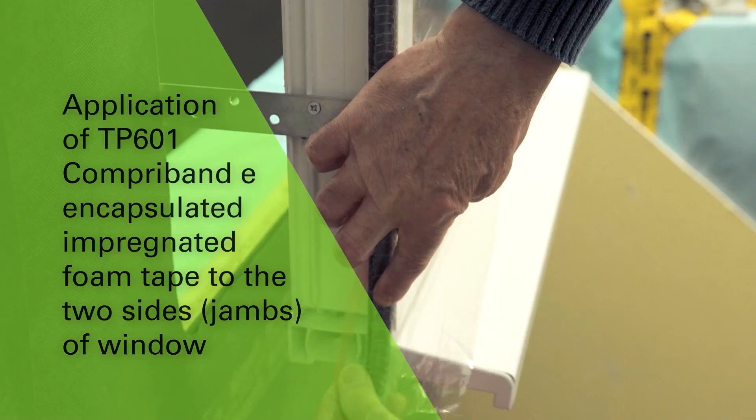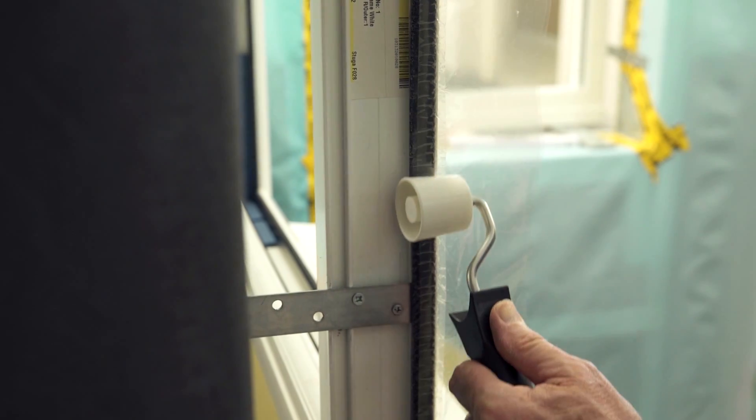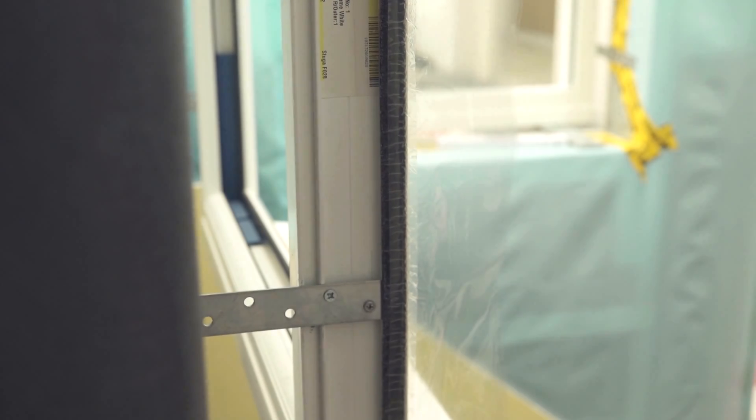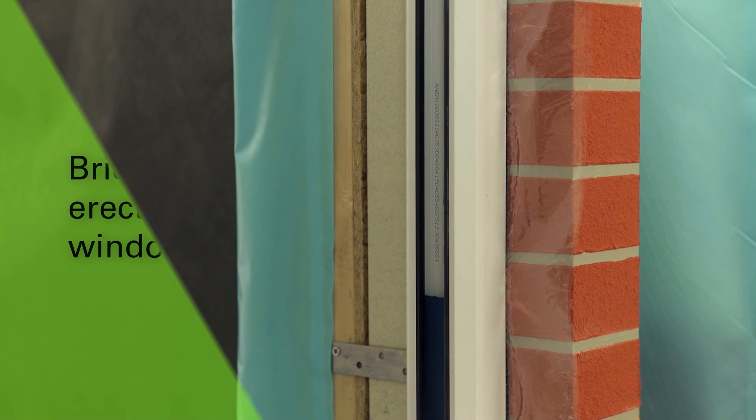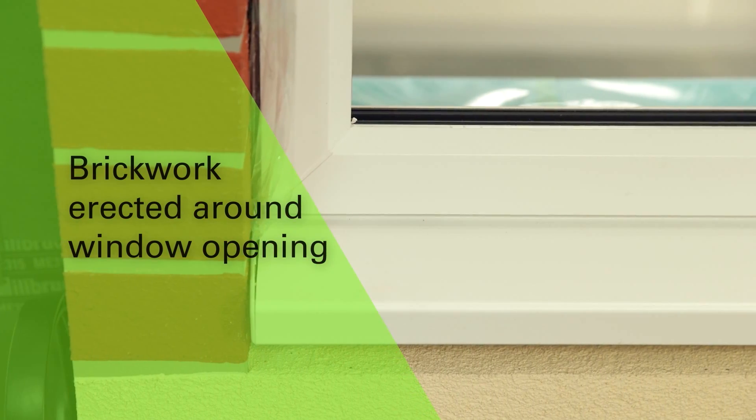With the window fixed in the timber frame opening, Comproband TP601 encapsulated impregnated foam tape is applied to the window jams. The encapsulating sleeve is left in place and the external brick skin is erected around the window.